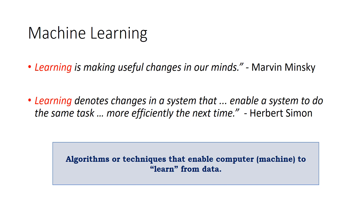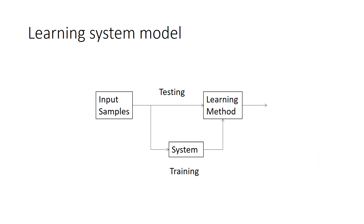For example, you went for a picnic and clicked some pictures — those pictures are data. You posted on a social network site — that is also data. So you are creating and generating data and uploading it to websites. Now, how does the learning model work in machine learning?